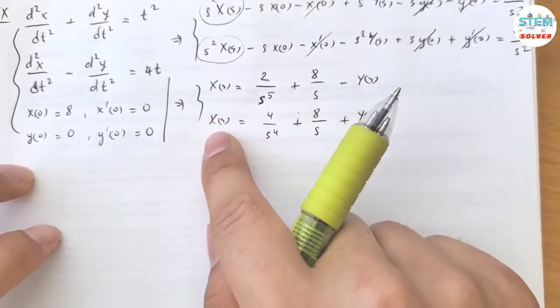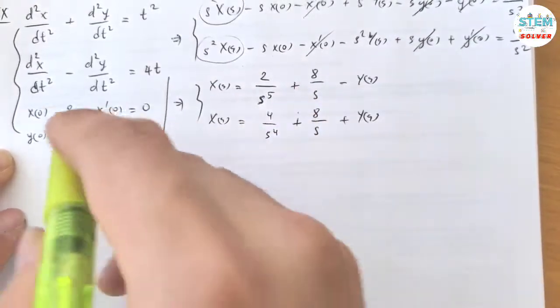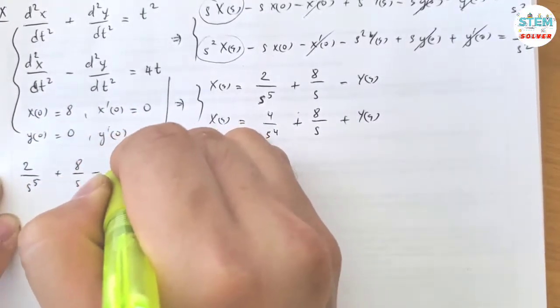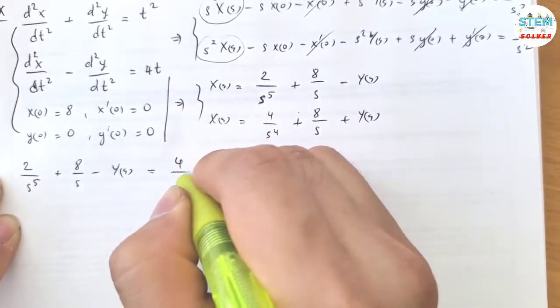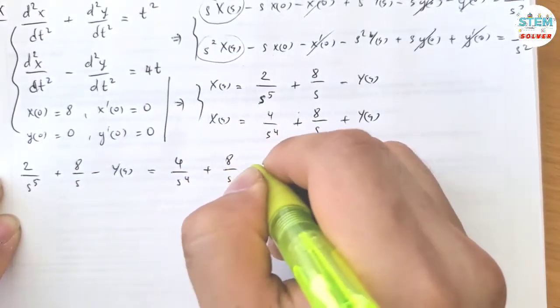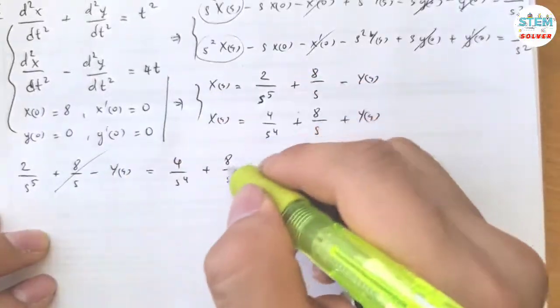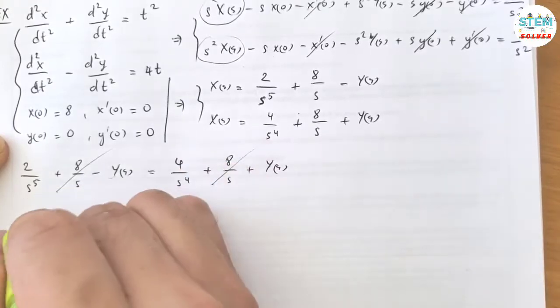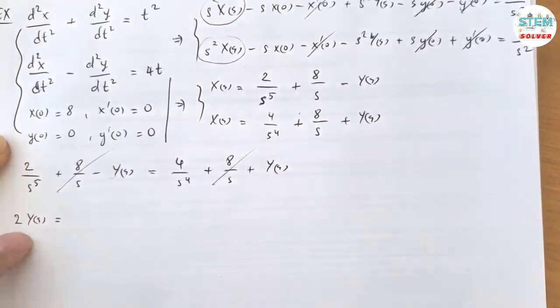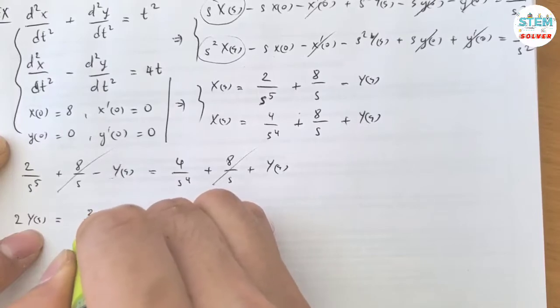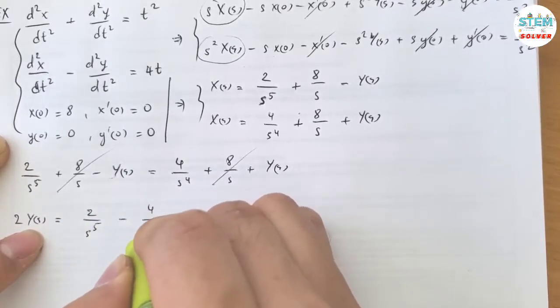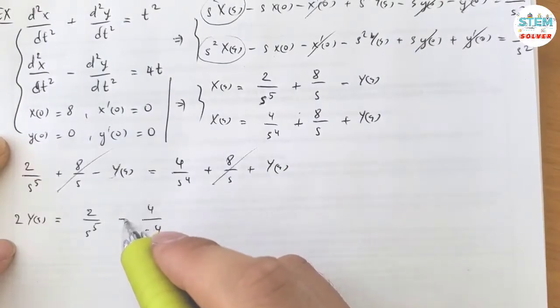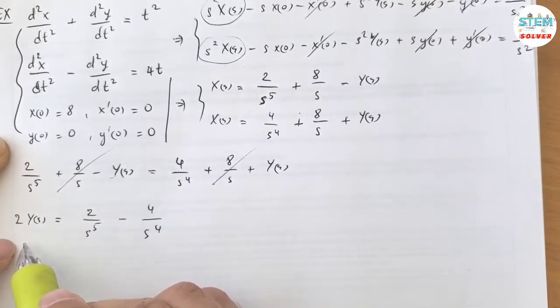Now X(s) equals this and X(s) also equals this, so set these equal to each other and solve for capital Y(s). Minus 4 over s to the fifth minus 4 over s to the fourth. Then divide both sides by 2.